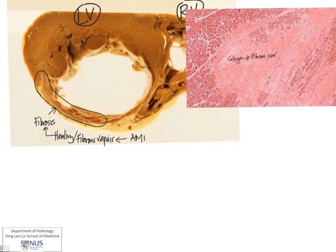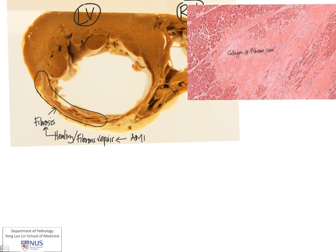If you just look at the heart with the naked eye, you can see that because the wall here is so thin, and we know that it is replaced by collagen rather than growing back of the heart muscle, therefore there will definitely be a reduction in tensile strength and a weakening of the wall.